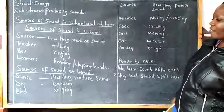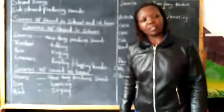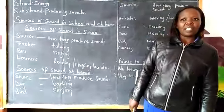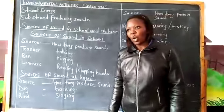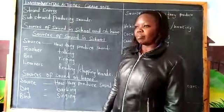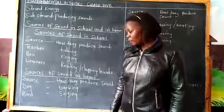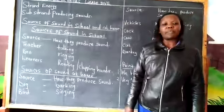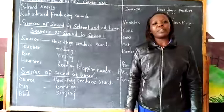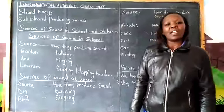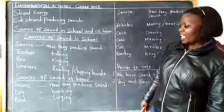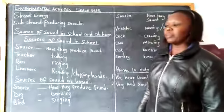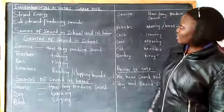We have a dog at home. When a dog barks, it produces sound. The dog barks like: ku, ku, ku — that is sound produced. Even when birds are singing, they produce sound.